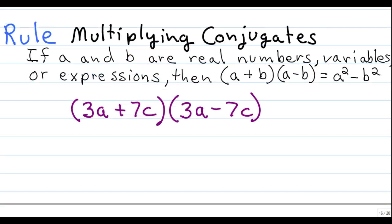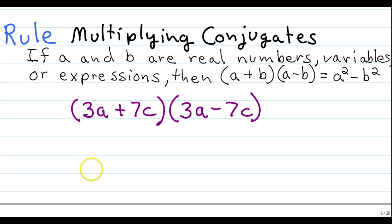Now let's look at the same problem again using the special products rule as instructed. We have 3a plus 7c times 3a minus 7c. These two binomials look alike except for the sign in the middle — one is plus and the other is minus. These are called conjugates. The rule states: if a and b are real numbers, variables, or expressions, then (a + b)(a − b) = a squared minus b squared.